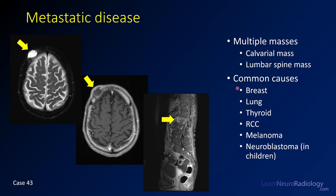When you see these, they're often associated with common malignancies: breast and lung cancer. We also see a lot of melanoma and renal cell carcinoma. In children, think about neuroblastoma — these are common malignancies that can metastasize to bone.